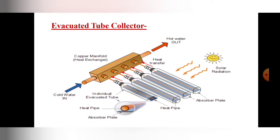In today's lecture, we are first going to study in detail the non-concentrating types of solar collectors, that is flat plate collectors and evacuated tube collectors. In the next lecture, we will see the concentrating types of collectors with their four types. So let's continue with the flat plate collectors.